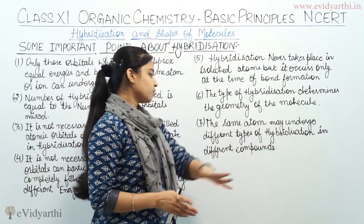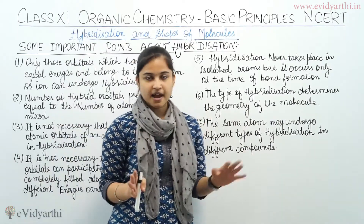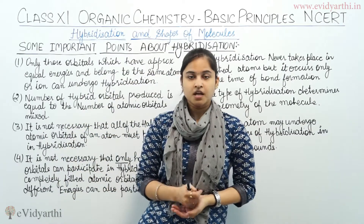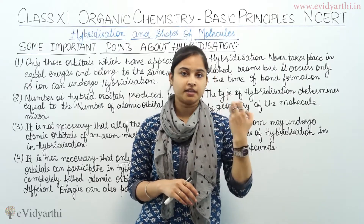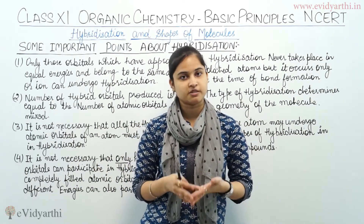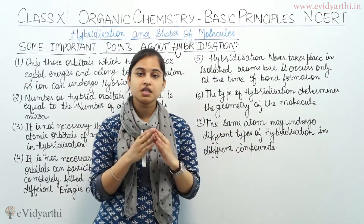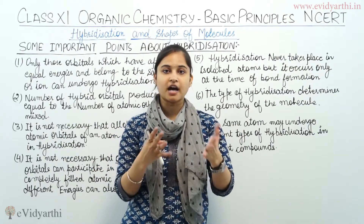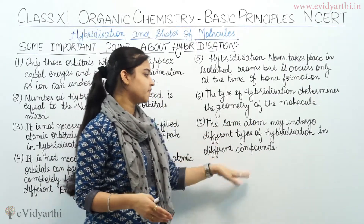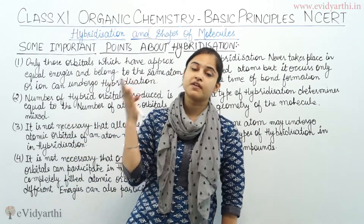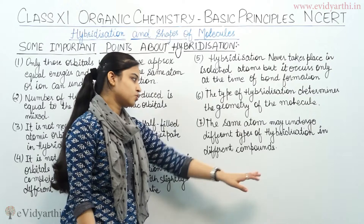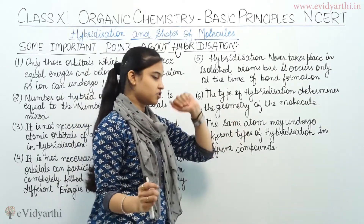Seventh point: the same atom may undergo different types of hybridization in different compounds. For example, carbon can be sp3 hybridized in one compound, sp2 in another, and sp in yet another. So carbon can exhibit different types of hybridization depending on which compound it is in.